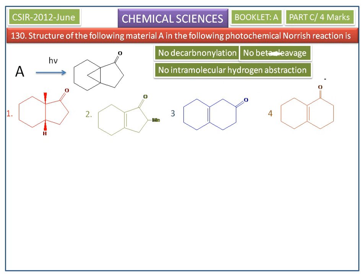There is no beta cleavage because the product does not have an olefin and ketene part. From this observation, we can say there is a simple alpha cleavage, and after bond cleavage and recombination of radicals, we get the product.